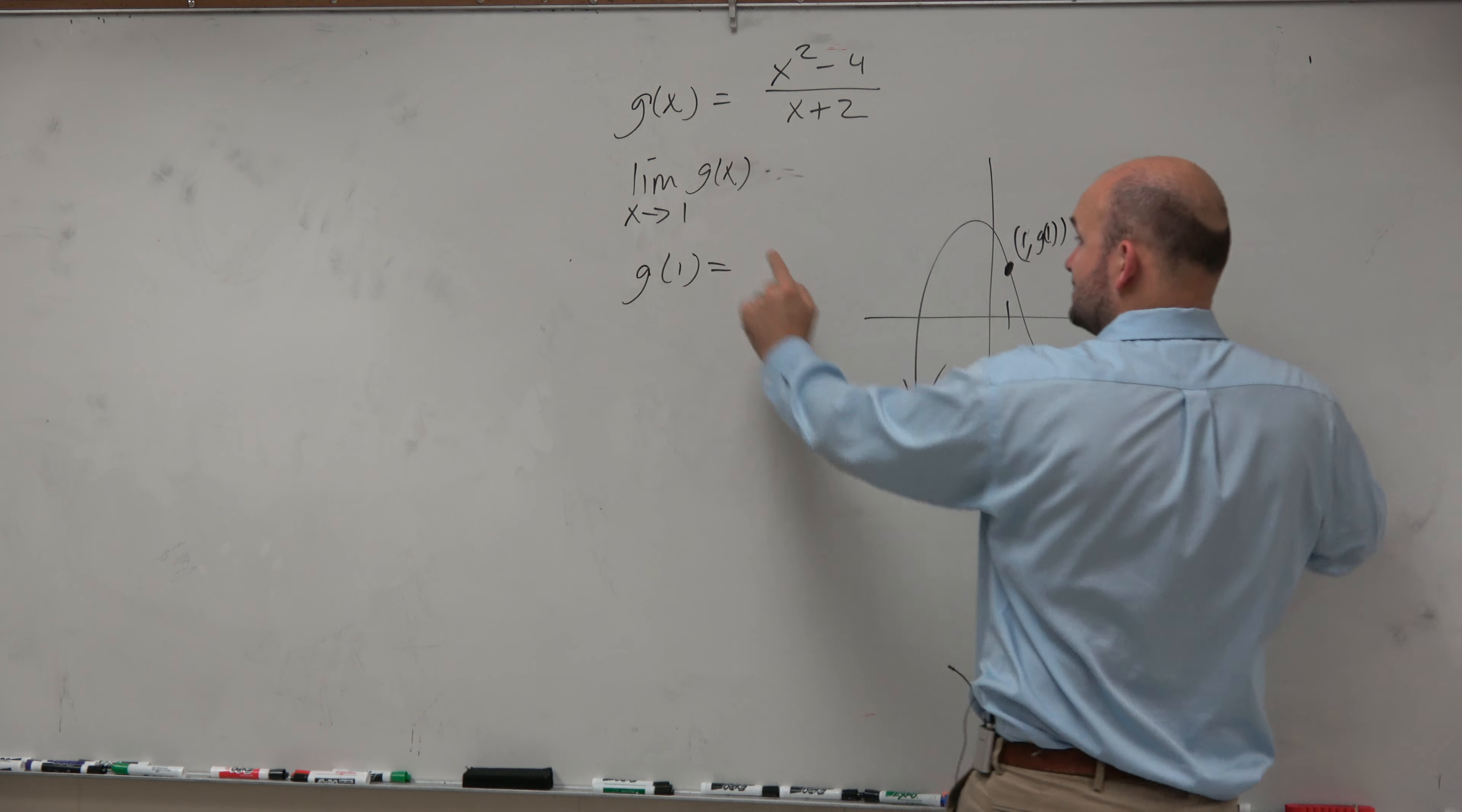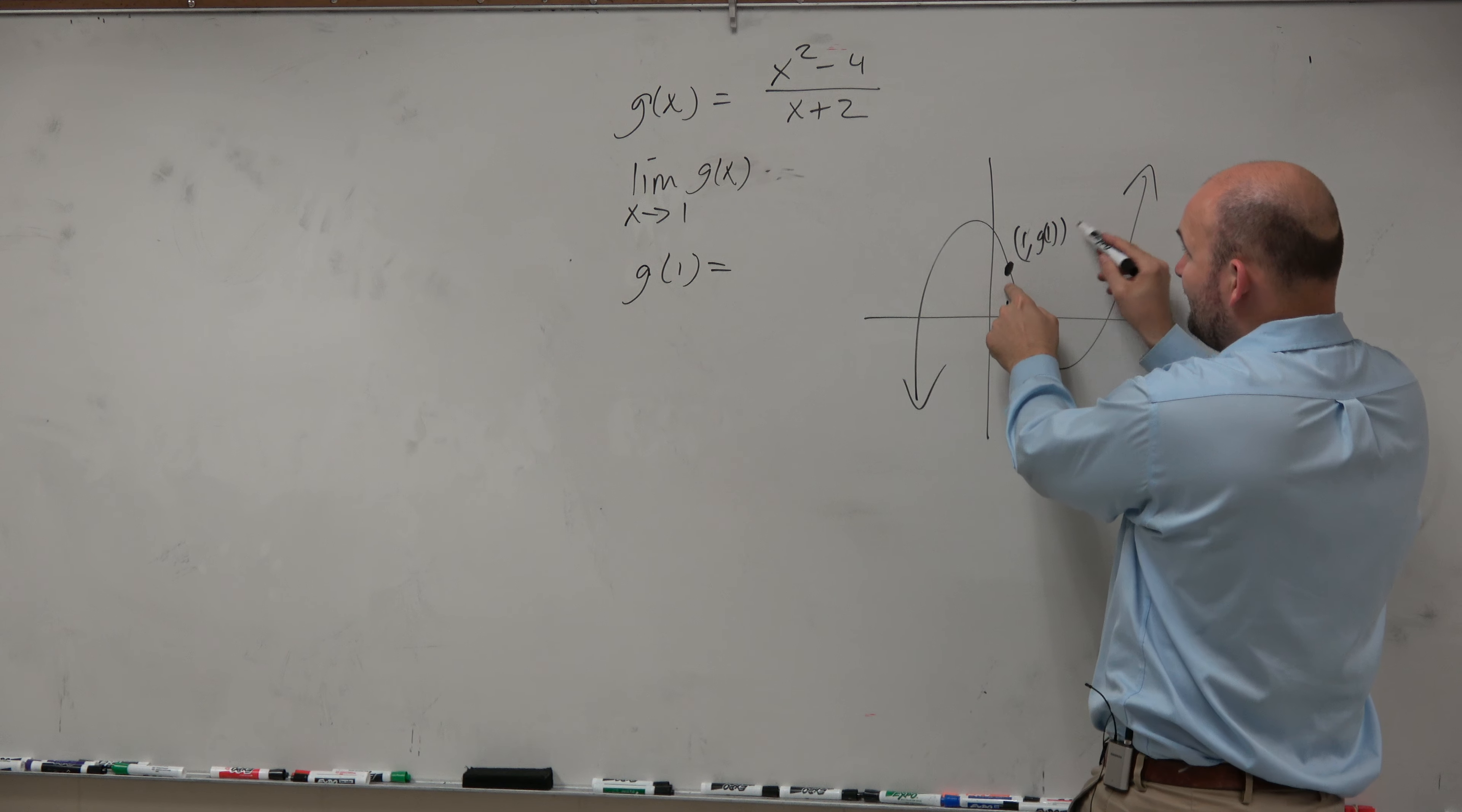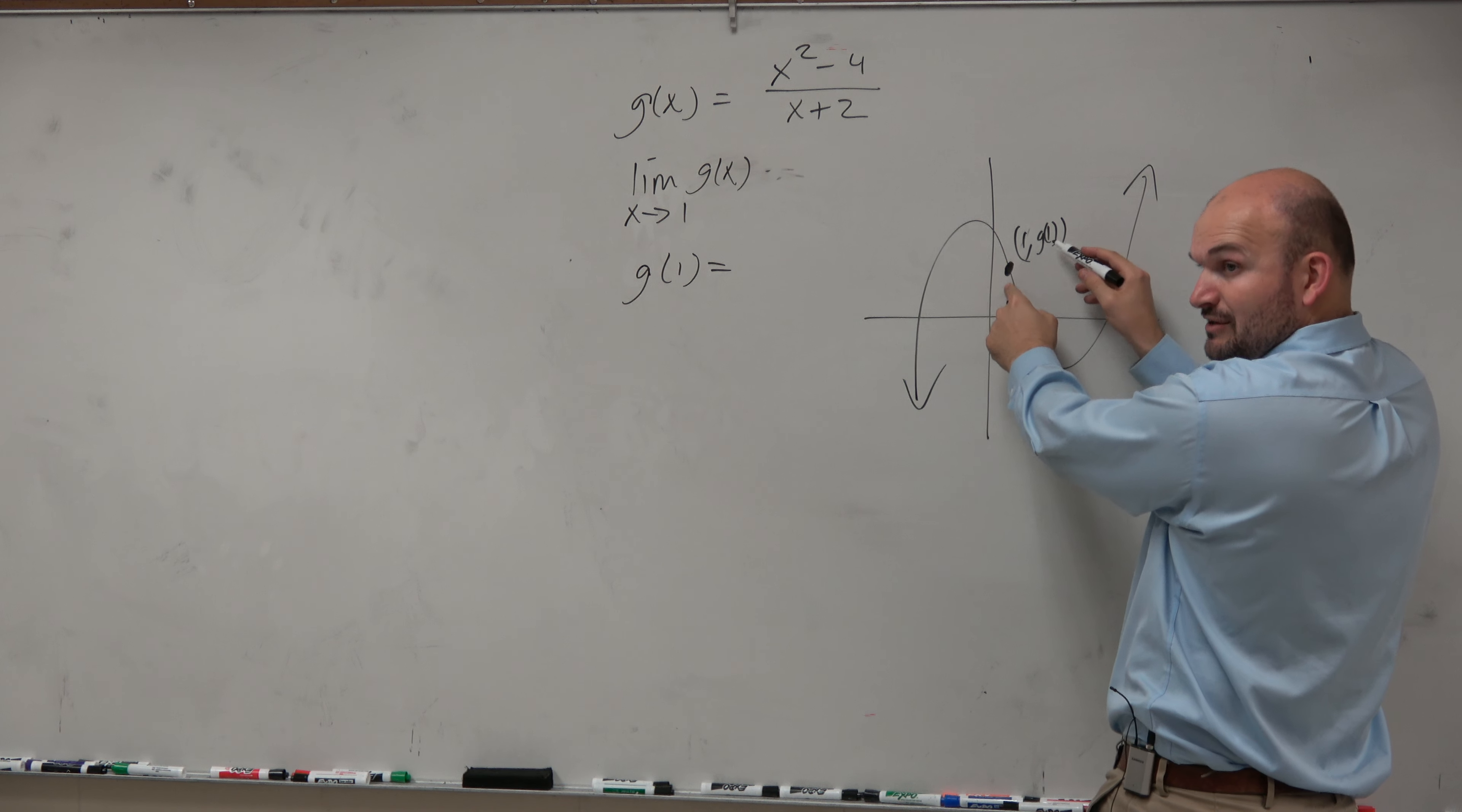If I want to evaluate the limit and I have a coordinate point from the left and right, whatever I plug in for g of 1, that's going to be the value that the limit is reducing.